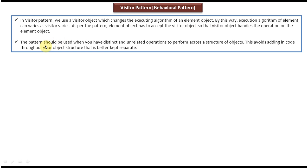And this is the second explanation. The pattern should be used when you have distinct and unrelated operations to perform across the structure of objects. This avoids adding code throughout your object structure that is better kept separate. I will show you one diagram so that you will understand this explanation very clearly.